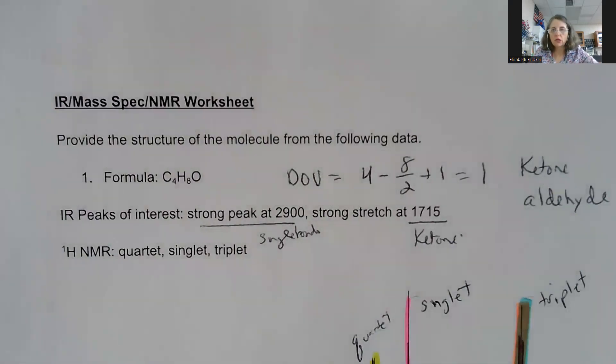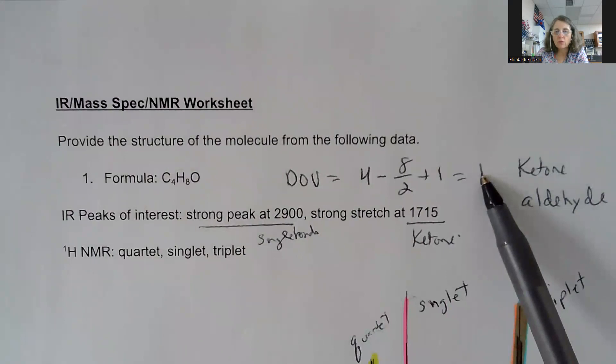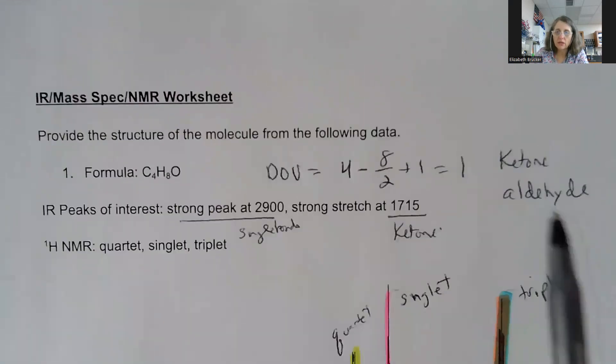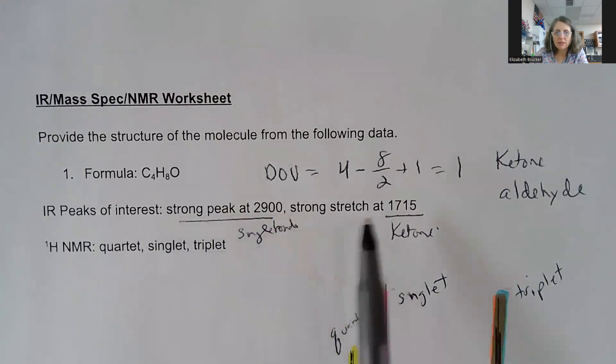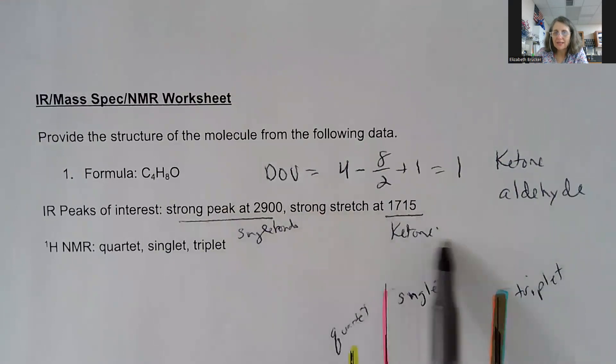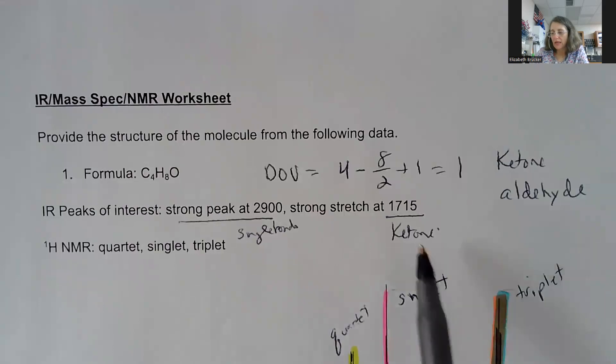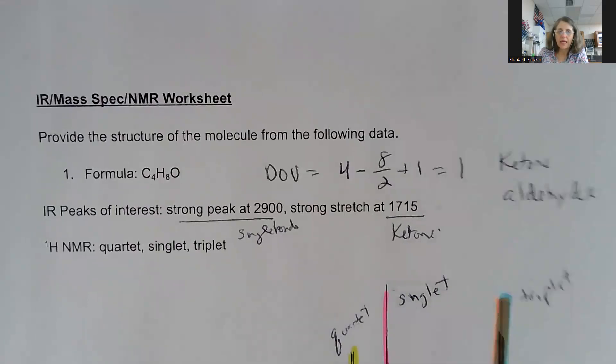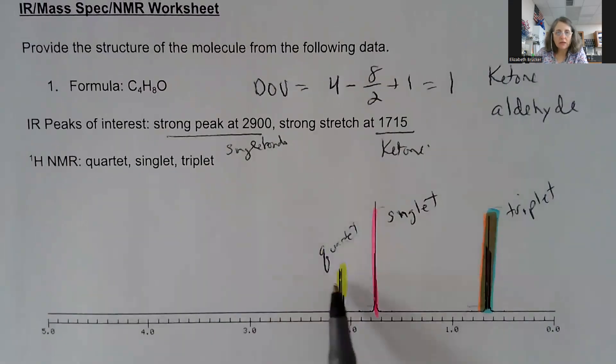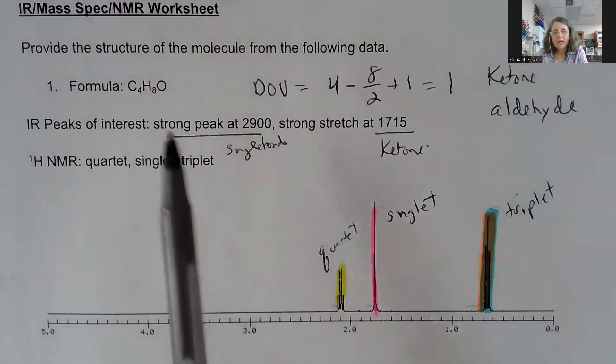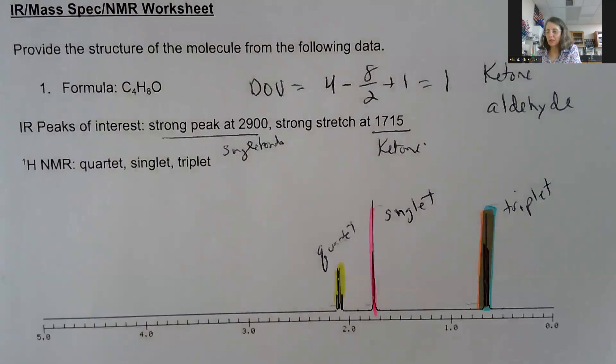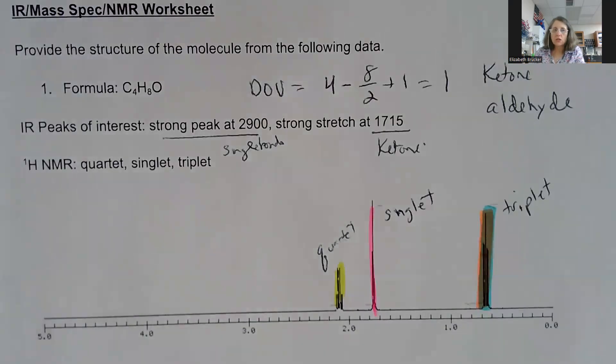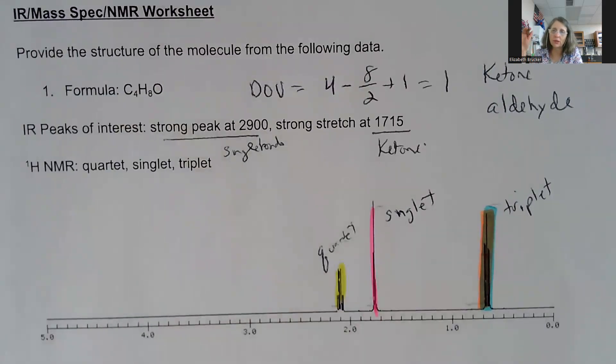So question number one, you're given a formula. Always do the first step, which is to do degrees of unsaturation. So I end up with a degree of unsaturation of one, and notice I have one oxygen in the formula. That's going to lead me to believe that I have a ketone or an aldehyde in there. I then look at my IR, and I see that I have single bonds, I have a strong stretch around 1715, so that's got to be my ketone. A ketone has a double bond oxygen somewhere in the formula, and I have my NMR.